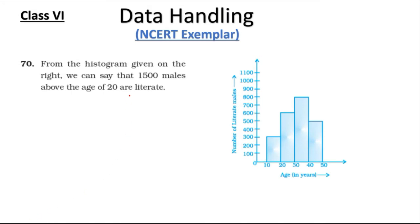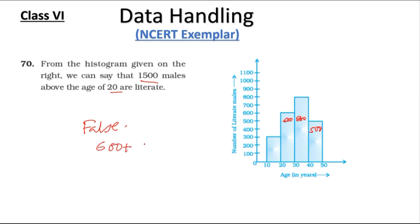Question 70: From the histogram given, we can say that 1500 males above the age of 20 are literate — this is false. The number of literate males above age 20 are: 600 plus 800 plus 500, which equals 1900, not 1500.